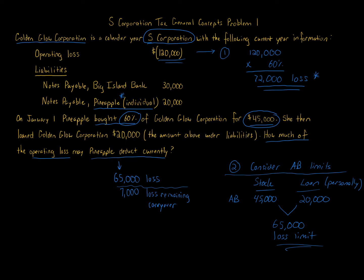Now, two variants: what if this were Golden Glow Partnership and Pineapple were a partner? Regardless of whether Pineapple individually loaned the money, you would combine both loan amounts — $30,000 plus $20,000 equals $50,000 total liabilities — and take 60% of that, which is $30,000. Adding that to the $45,000 contributed gives a loss limit of $75,000, meaning Pineapple could deduct the full $72,000 loss.